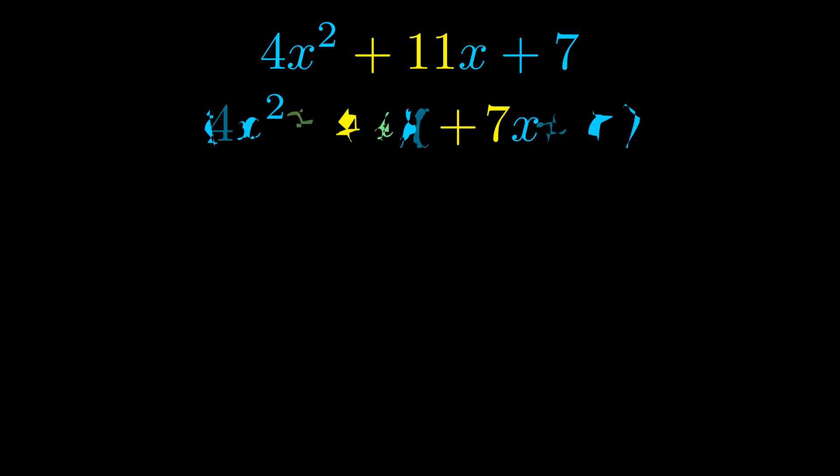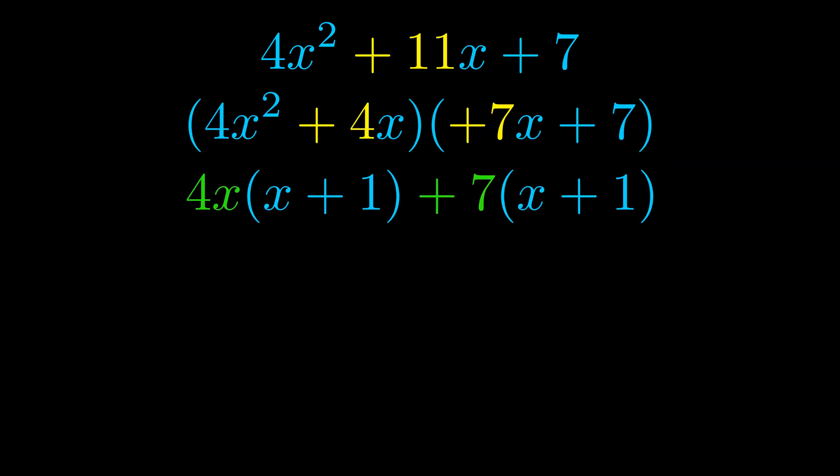Once we've done this we go ahead and we put parentheses around the first term and the last term and we do that so that we can take the greatest common factor out of both terms. We can see the greatest common factor is now outside in green.